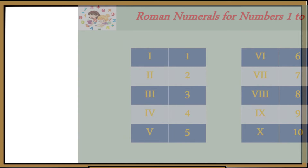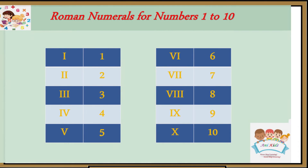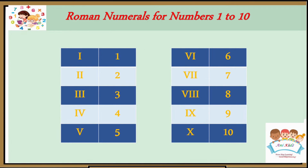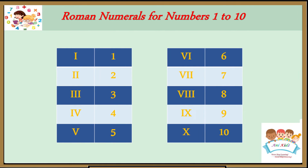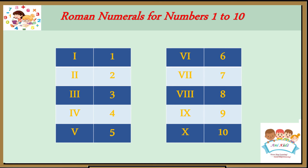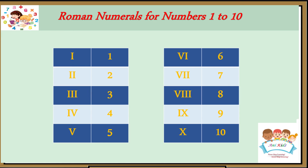See, children, see again in this chart: I is 1, double I is 2, triple I is 3, IV is 4, V is 5, VI is 6, VII is 7, VIII is 8, IX is 9, and X is 10.